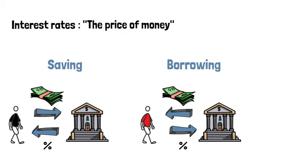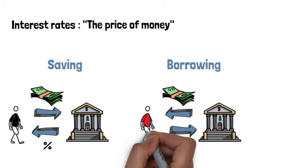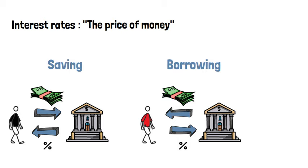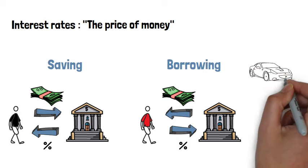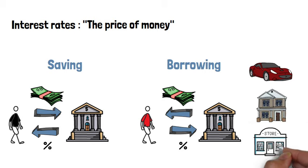If interest rates are high, borrowing is expensive, and people prefer to leave their money in the bank so it earns interest. On the other hand, if interest rates are low, then money is cheap, and people will borrow more in order to buy durable goods like cars, or to invest in improving their homes or in a business.